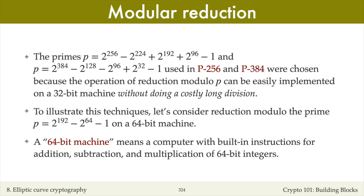Recall that the primes p used in curves P256 and P384 have a special form: they are sums and differences of just five powers of two, where the exponents of two are multiples of 32. These primes were selected because the operation of reduction modulo p can be easily and efficiently implemented on a 32-bit machine without doing an explicit long division.